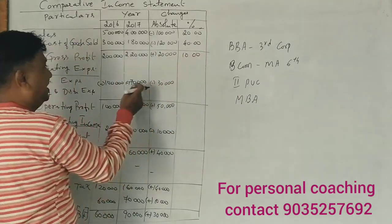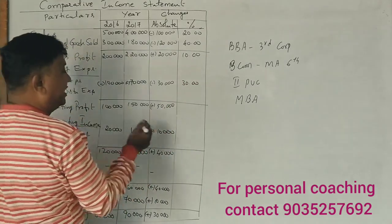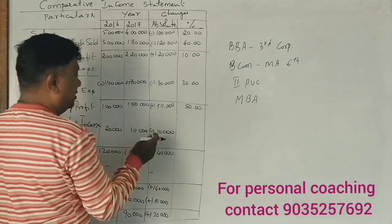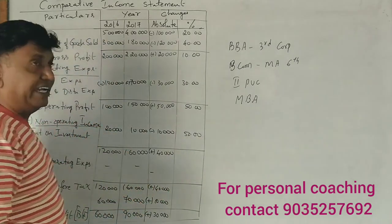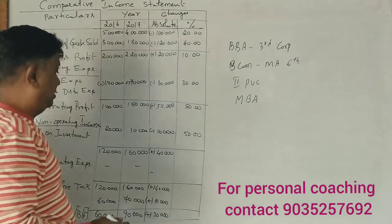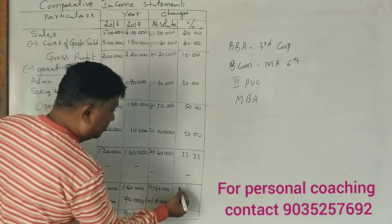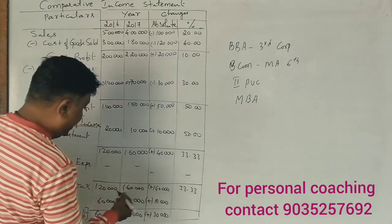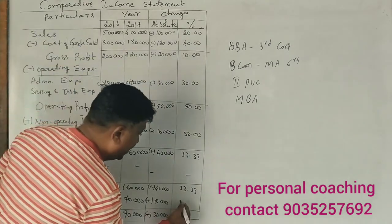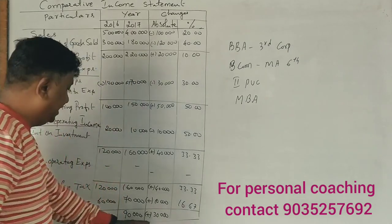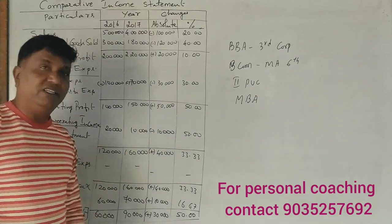For percentage change: 30,000 divided by 1,00,000 is 30%. 50,000 divided by 1,00,000 is 50%. 10,000 divided by 20,000 is 50%. 40,000 divided by 1,00,000 is 40%. And 30,000 divided by 60,000 is 50%.